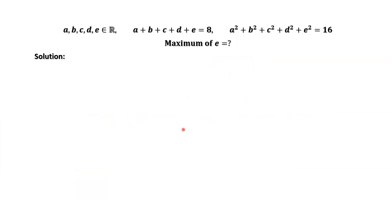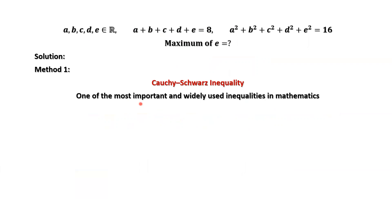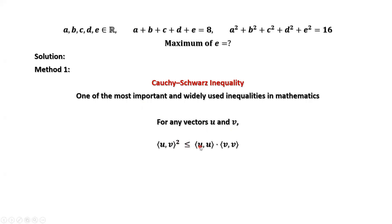We are going to use two different methods to solve this question. The first method uses the Cauchy-Schwarz inequality. This is a very important inequality in mathematics. For any vectors U and V, the inner product of U and V squared is less than or equal to the inner product of U and U times the inner product of V and V. Here, this symbol means the inner product.